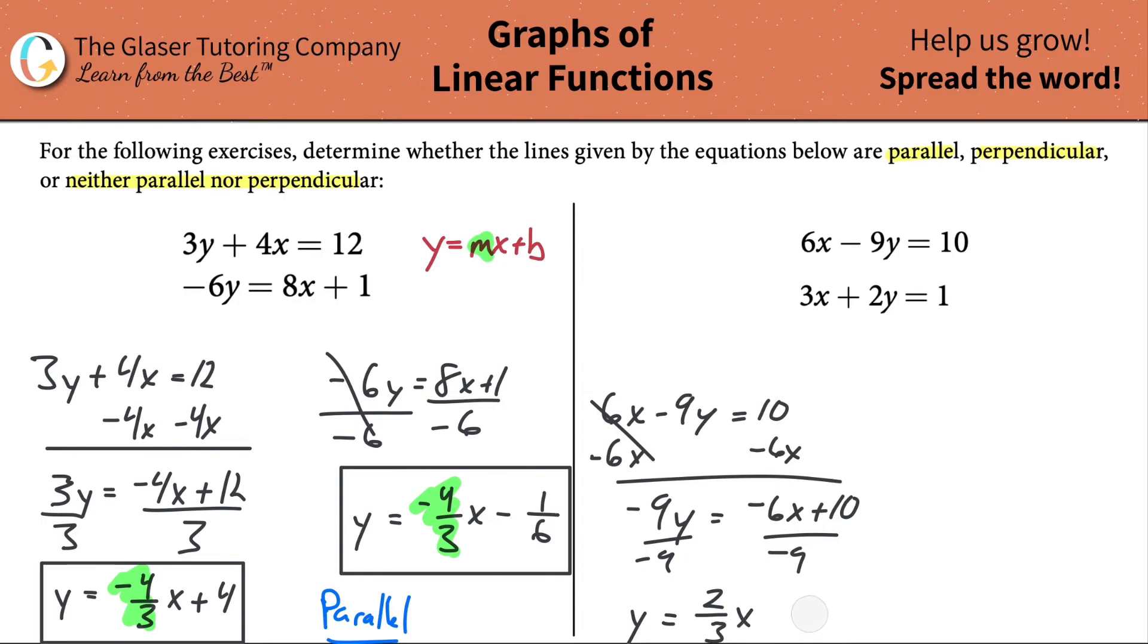Whoops, just seeing if you're paying attention, negative 10 over 9. Remember negative 6 over negative 9 is reducible down to 2 over 3, because each of them are divisible by 3, and then the negatives would have canceled out. So here's the equation of the first.